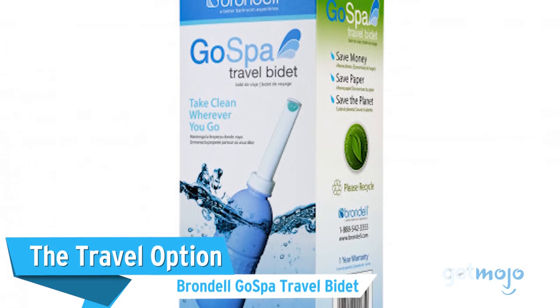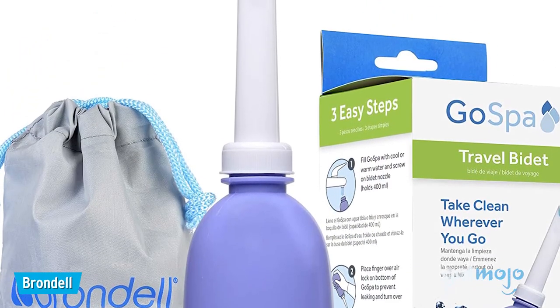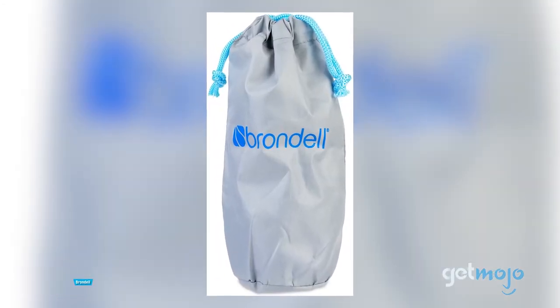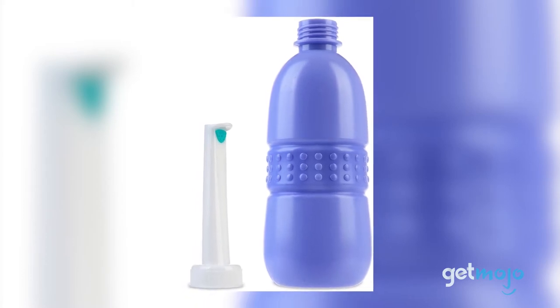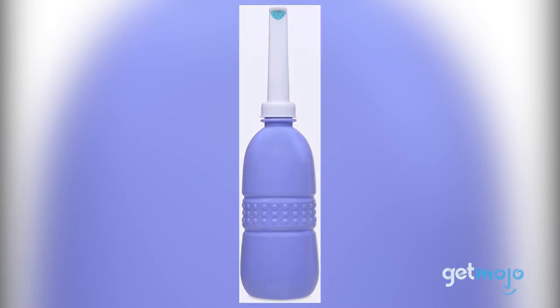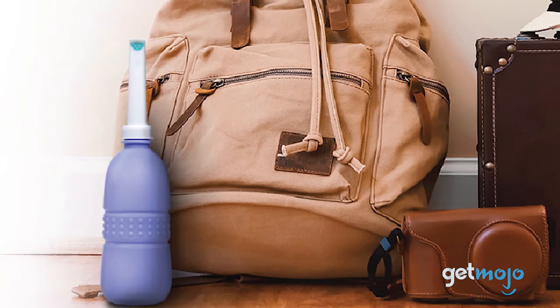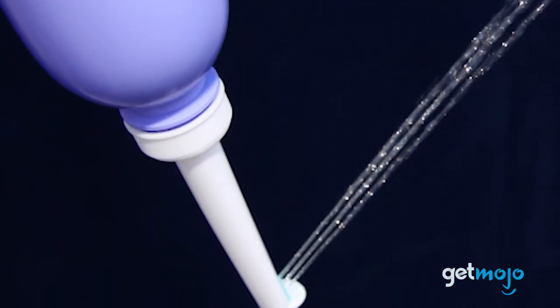The travel option. The Brondel GoSpa Travel Bidet. If you simply can't travel without a bidet, or you just want a covert bidet to store in your bathroom cupboard, at just $15, the Brondel GoSpa Travel Bidet is an excellent option. Capable of holding up to 400 milliliters of water, it's incredibly simple to use and very easy to store discreetly in a small bag. How do you use it exactly? Well, you fill it up, point and squeeze. Simple.